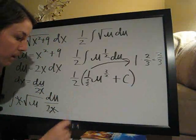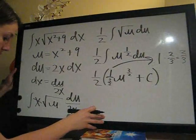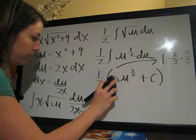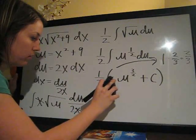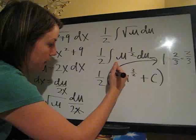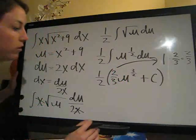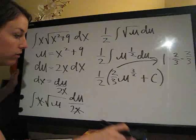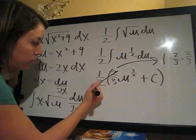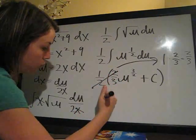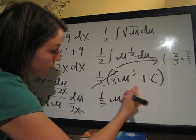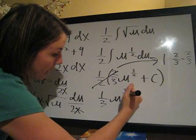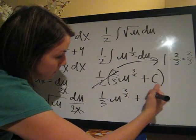So, let's go ahead and change this here to 2 thirds, so that we can see that. 2 thirds. So, we're going to do 1 half times 2 thirds. The 2's cancel, and it's 1 third. 1 third u to the 3 halves plus c.